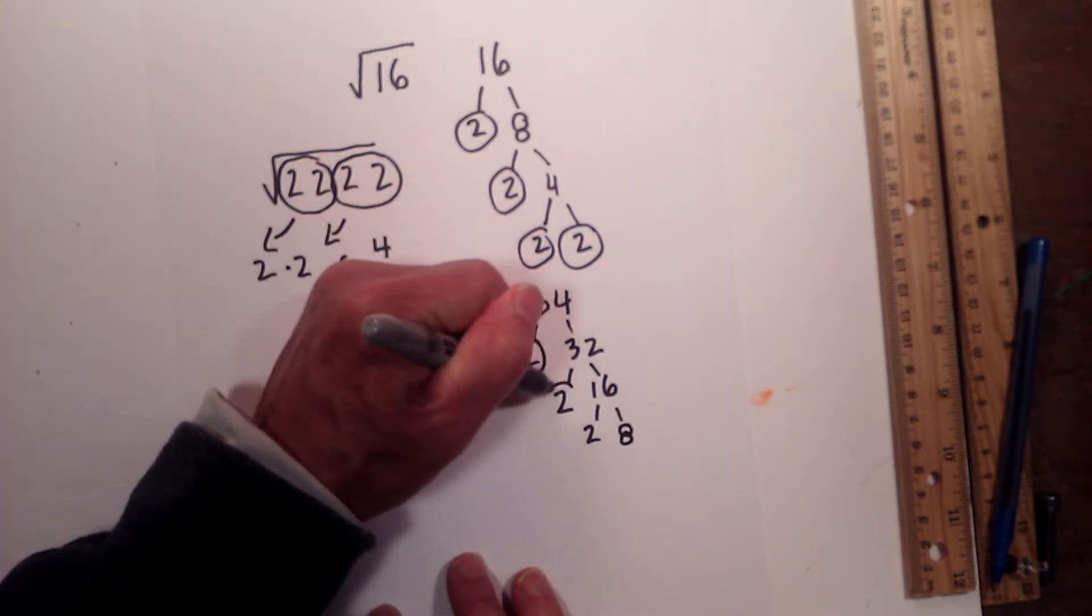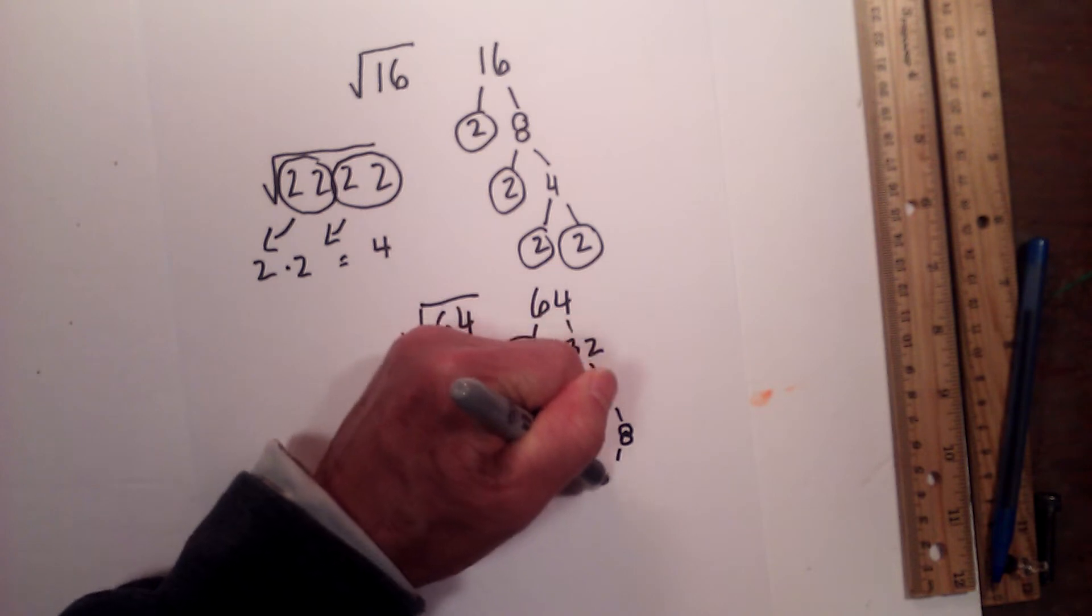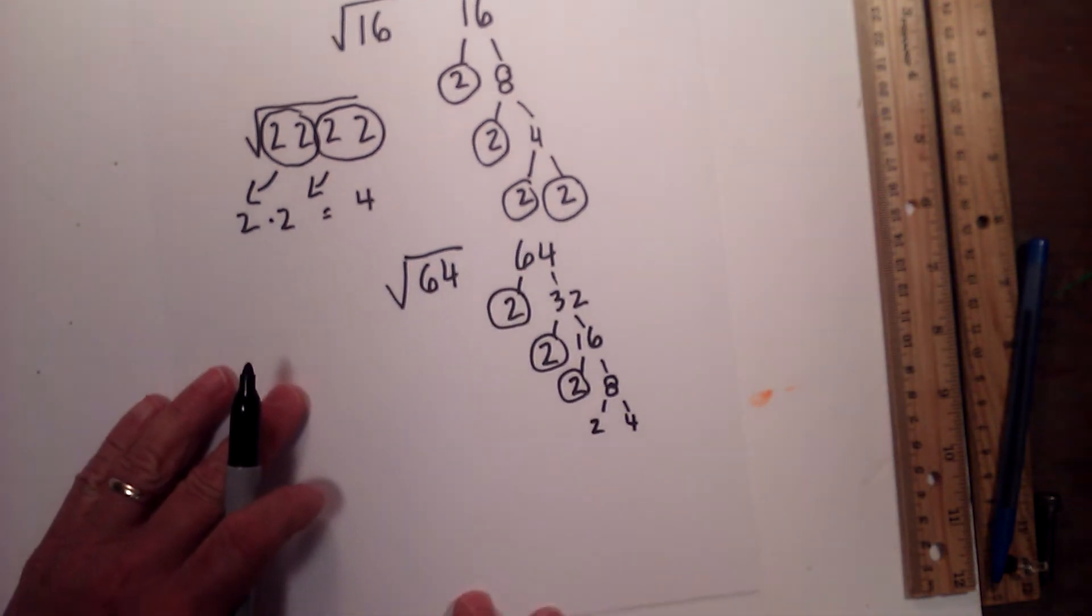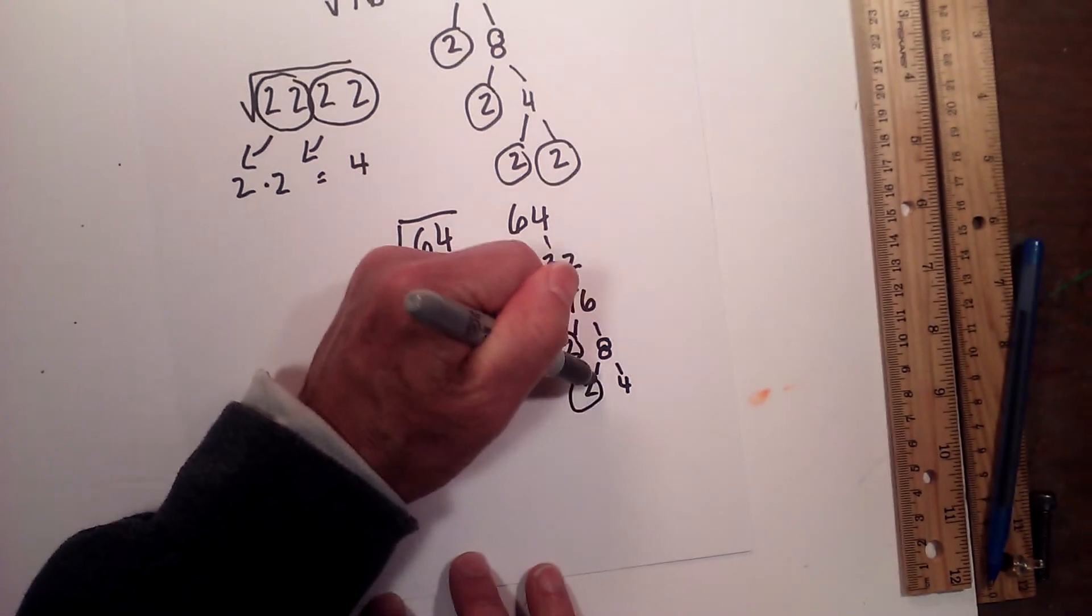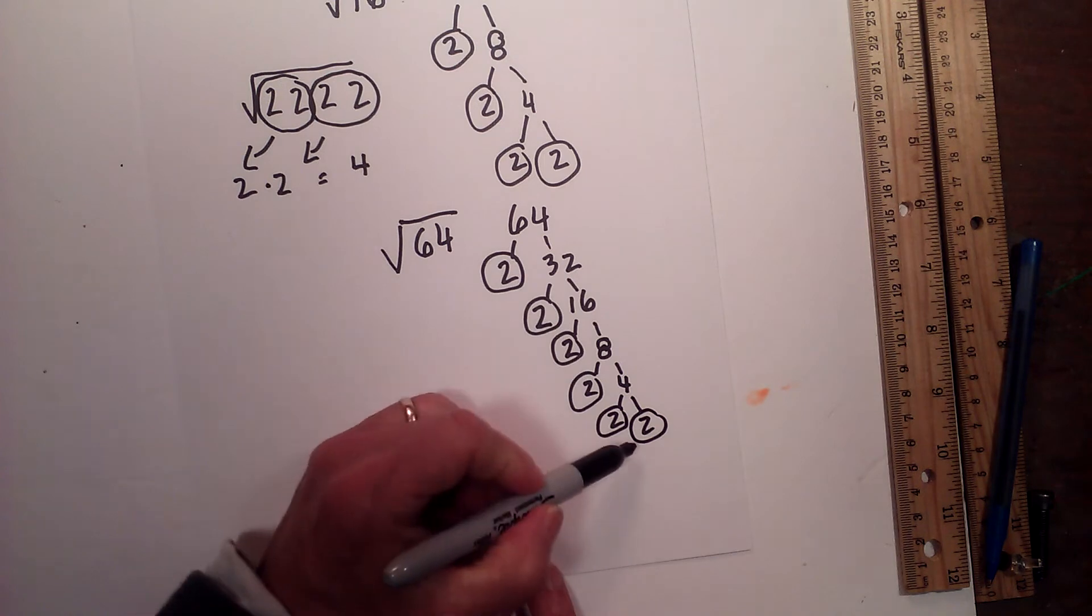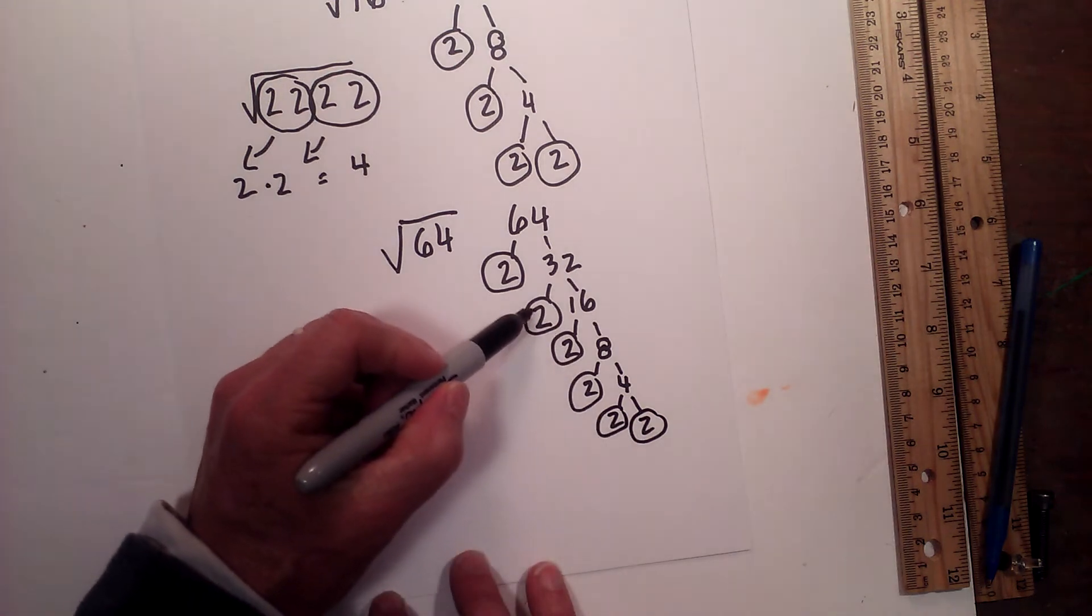Then 2 times 8, make sure I circle the prime numbers, then 2 times 4, move this up just a little bit, circle the 2, and then 2 times 2. So we have a lot of 2s represented, in fact, we have 1, 2, 3, 4, 5, 6.